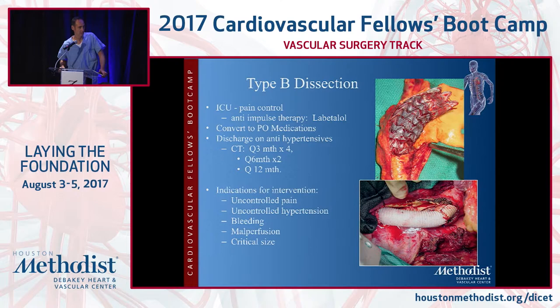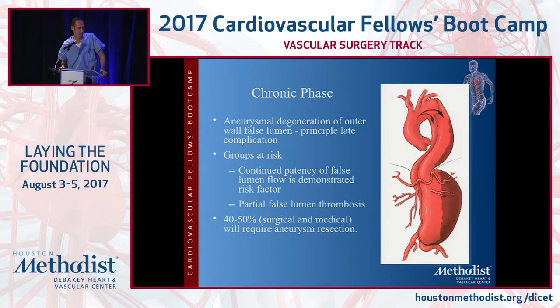For type B dissections, the mainstay is ICU pain control and anti-impulse therapy. Once managed conservatively, you want to switch over to PO medications and discharge on antihypertensives with follow-up CTs. In the chronic phase, look for aneurysmal degeneration of the outer false lumen. Groups at risk include those with continued patency of the false lumen flow, and partial false lumen thrombosis is a risk factor for poor outcomes. About 40 to 50% of patients will require some form of aneurysm resection.